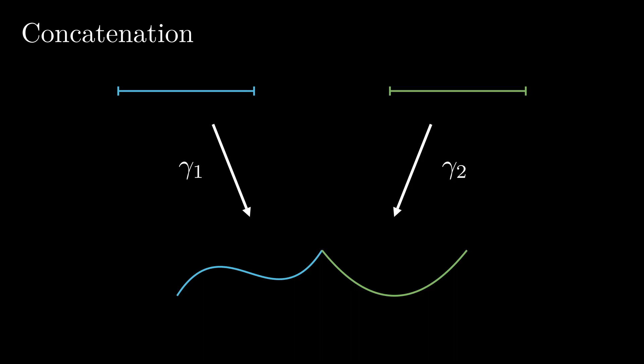One of the most basic constructions one can make for curves is concatenation. Imagine that we have two curves, gamma1 and gamma2, such that gamma2 begins exactly where gamma1 ends. Then we can form the concatenation gamma1 asterisk gamma2 that consists of first traveling along gamma1, and then along gamma2.